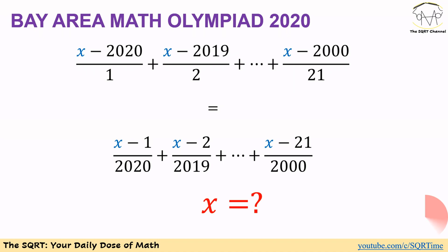We continue this pattern until x minus 2000 over 21 on the left-hand side of the equation. For the right-hand side we have x minus 1 over 2020 plus x minus 2 over 2019, continuing this pattern until we reach x minus 21 over 2000. We are looking to find the value of x.